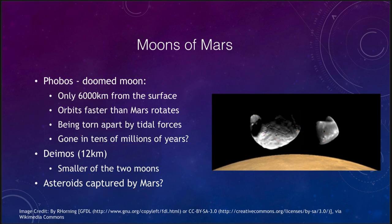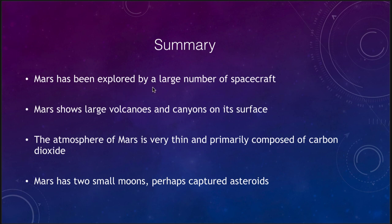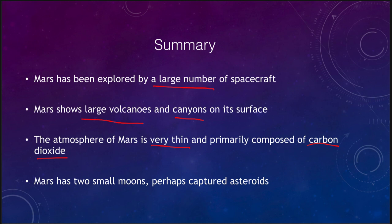Let's finish up with our summary of what we've covered on Mars. A large number of spacecraft have visited Mars and more are planned. We see large volcanoes and large canyons on the surface — very large features compared to what we see on Earth, especially for such a small planet. The atmosphere of Mars is very thin and is primarily carbon dioxide, much like Venus's atmosphere. Mars has two small moons which are perhaps asteroids that Mars captured in the past. That concludes our lecture on the geology and atmosphere of Mars — we'll be back again next time for another topic in astronomy. Have a great day everyone and I will see you in class!